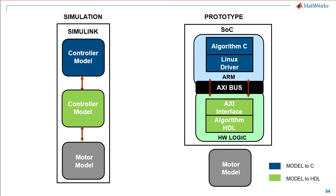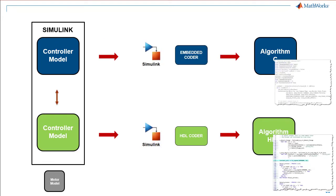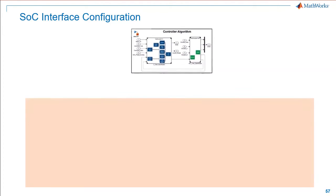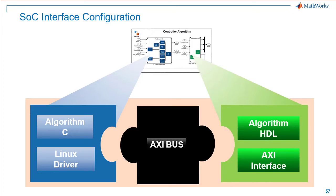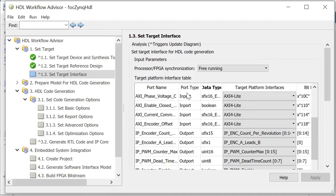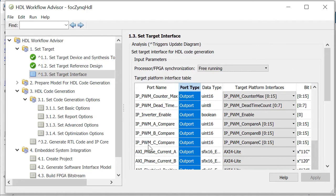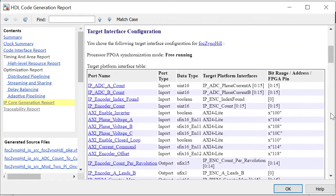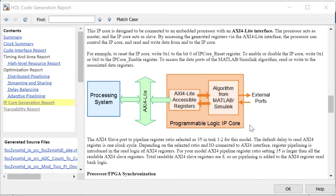Prototyping is a natural next step to build confidence in our simulation model. At this stage, you have generated the HDL code for the FPGA fabric and generated the C code for the ARM processor using the Embedded Coder, and would like to see it work on actual hardware. To prototype this implementation, the HDL code needs to interact with the SOC embedded processor via Advanced Extensible Interface, or AXI bus. This AXI target interface is auto-generated by the HDL Coder, which allows the embedded processor to read and write data from and to the FPGA fabric. Using the HDL Workflow Advisor, port names and their respective hardware interface are populated and generated.